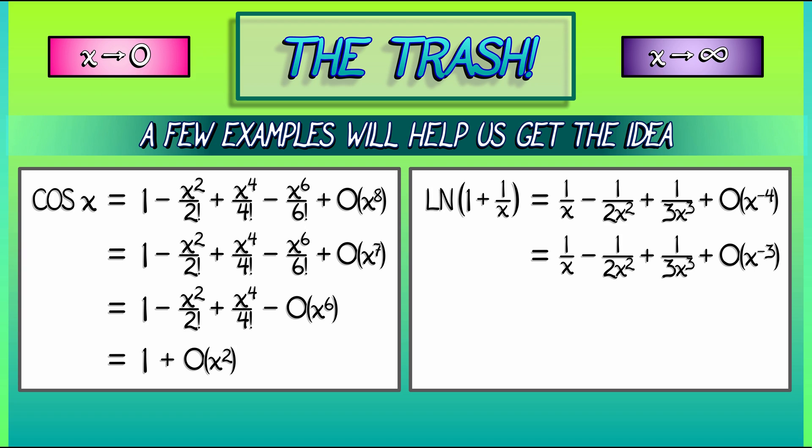We could absorb that into that big O term and get 1 over x minus 1 over 2x squared plus big O of x to the minus 3. If we only care about the leading order term, we can say that log of quantity 1 plus 1 over x is 1 over x plus some other stuff. That other stuff being in big O of x to the minus 2.